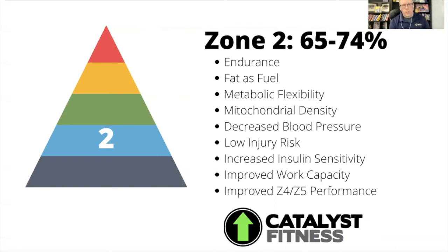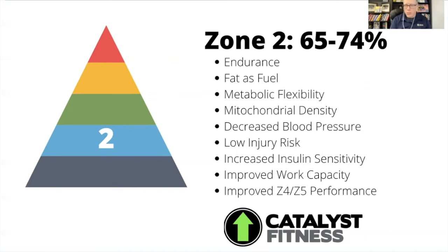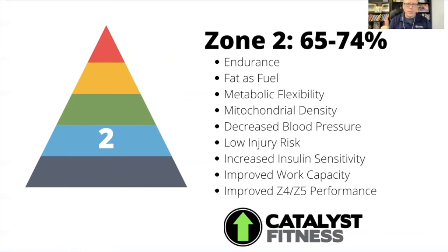Zone two also helps with mitochondrial density. Thinking back to grade 10 science, mitochondria are like the batteries of the cell — and the cool thing is you can grow more mitochondria and make them function better by doing zone two exercise. This will also decrease your blood pressure and may lower blood lipid levels. There is very low injury risk in zone two — nobody is overtraining in zone two.